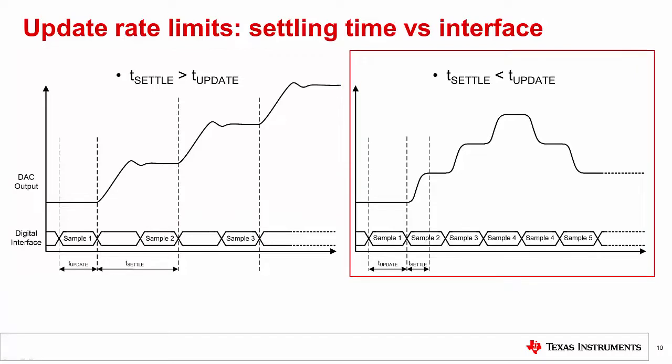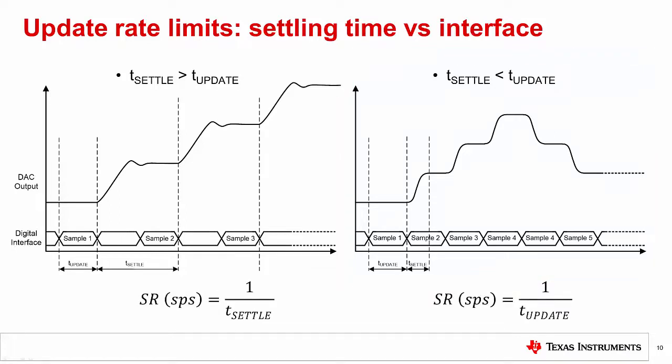On the right, we have an example of a DAC where the interface update time is longer than the settling time. This means the maximum DAC update sample rate is limited by the interface update time. The maximum sample rate is calculated by taking the inverse of either the settling time or the digital update time, whichever is longer.